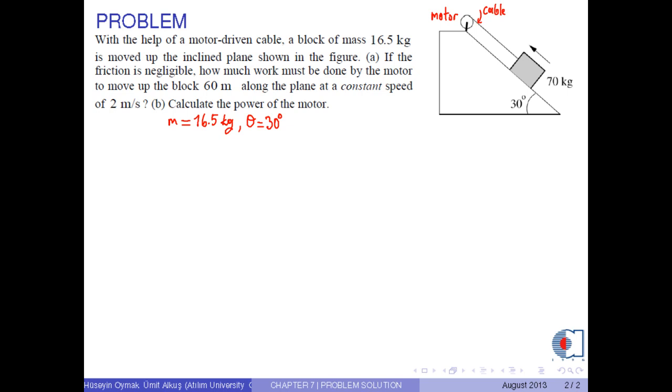Part A: If the friction is negligible, how much work must be done by the motor to move up the block 60 m along the plane at a constant speed of 2 m per second? Then, calculate the power of the motor.